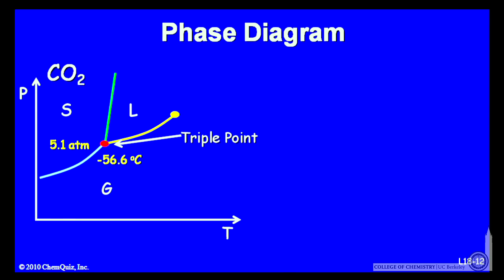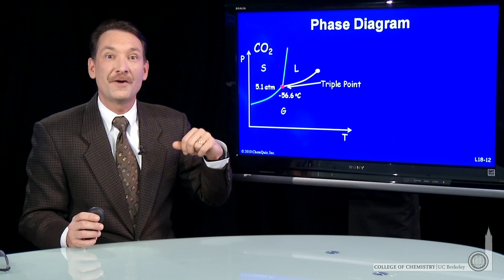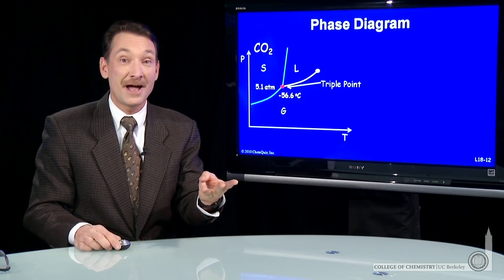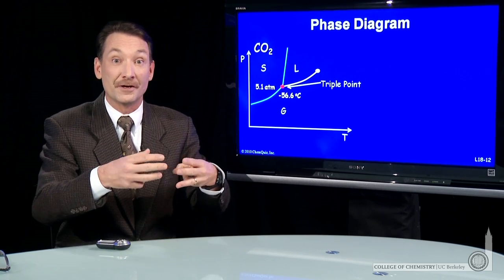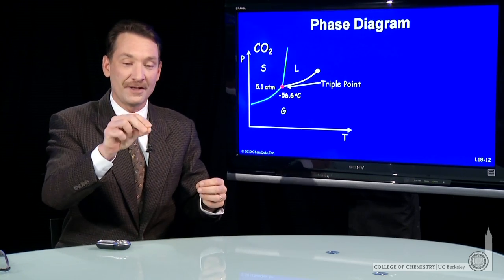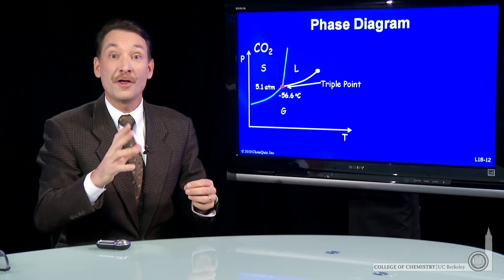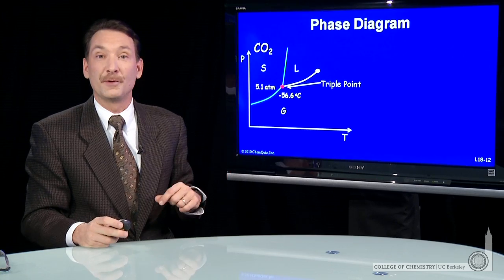For carbon dioxide, that's five atmospheres and minus 56 Celsius. So if you go to those conditions, you'll find solid, liquid, and gas carbon dioxide, all in equilibrium with each other. A particle can move from the solid phase to the liquid phase, liquid to solid, or solid to gas independently. All three are equally likely at the triple point.